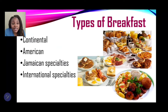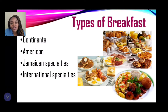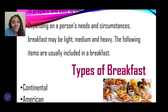Looking at the different types: continental breakfast consists of mostly quick breads, cheese, cold cuts like ham, jams and jellies, hot beverages, fruits, and ready-to-eat cereals. The American breakfast may have eggs, pancakes, waffles, and toast. Jamaican specialties include ackee and saltfish, salt mackerel, fried dumplings, and plantains. International specialties would be a mixture from different nations.